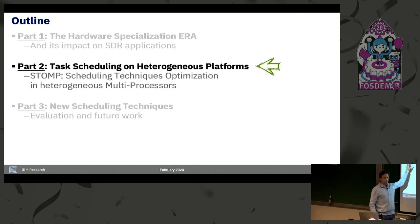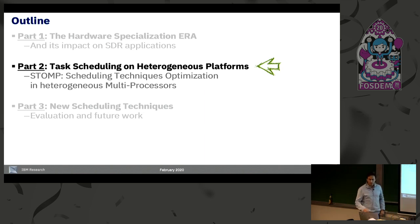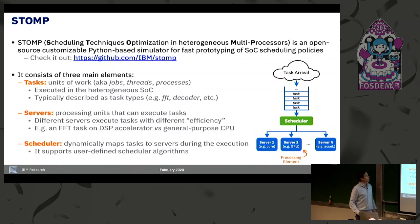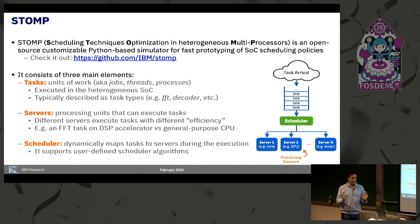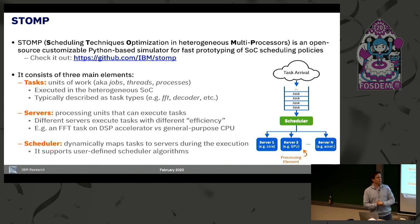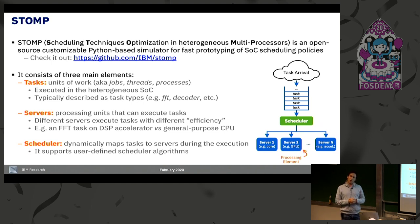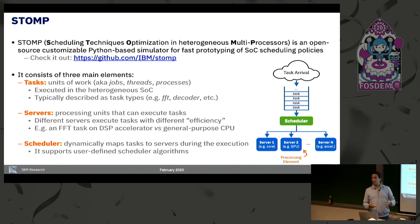I will present an open-source tool that we developed called STOMP, which allows us to prototype new scheduling policies in a very easy and fast manner. STOMP stands for Scheduling Techniques Optimization in heterogeneous Multiprocessor. It is an open-source tool that allows us to prototype and evaluate new scheduling policies for heterogeneous platforms in a very agile manner. It's written in Python and very easy to customize.